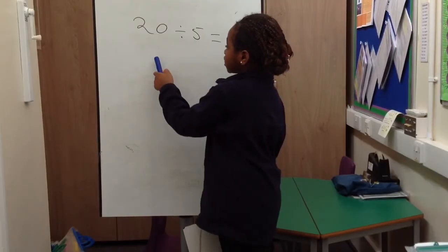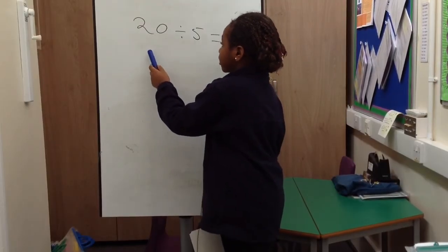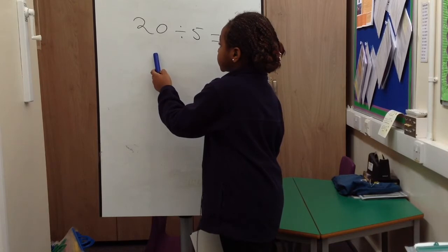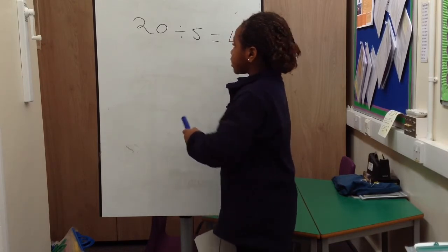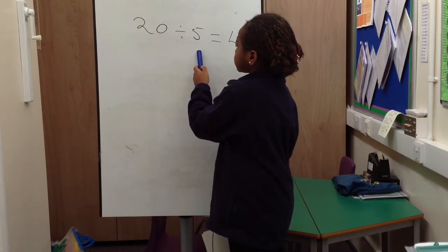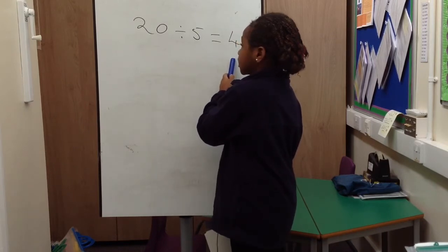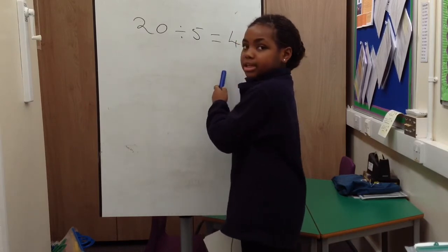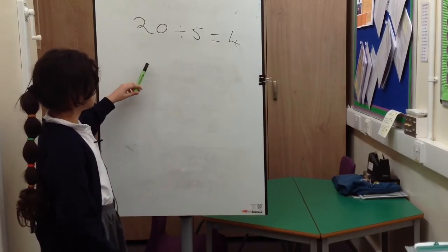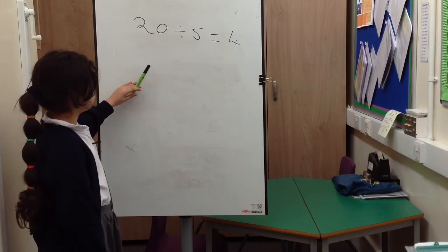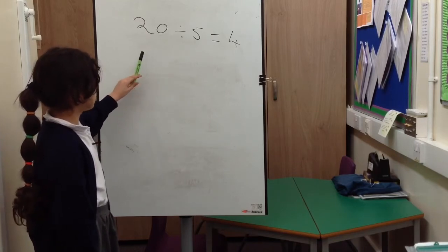This is what a calculation looks like. The 20 means how many we are dividing, the 5 means how many groups there are, and the 4 means how many in each group. So this dividing answer will be easy if we use our times tables facts.